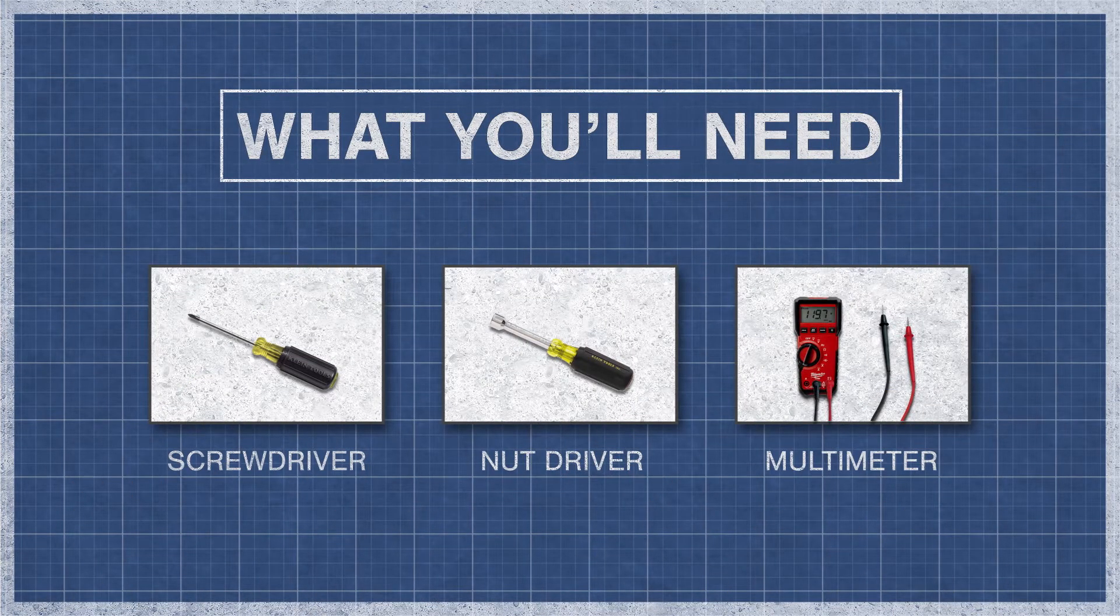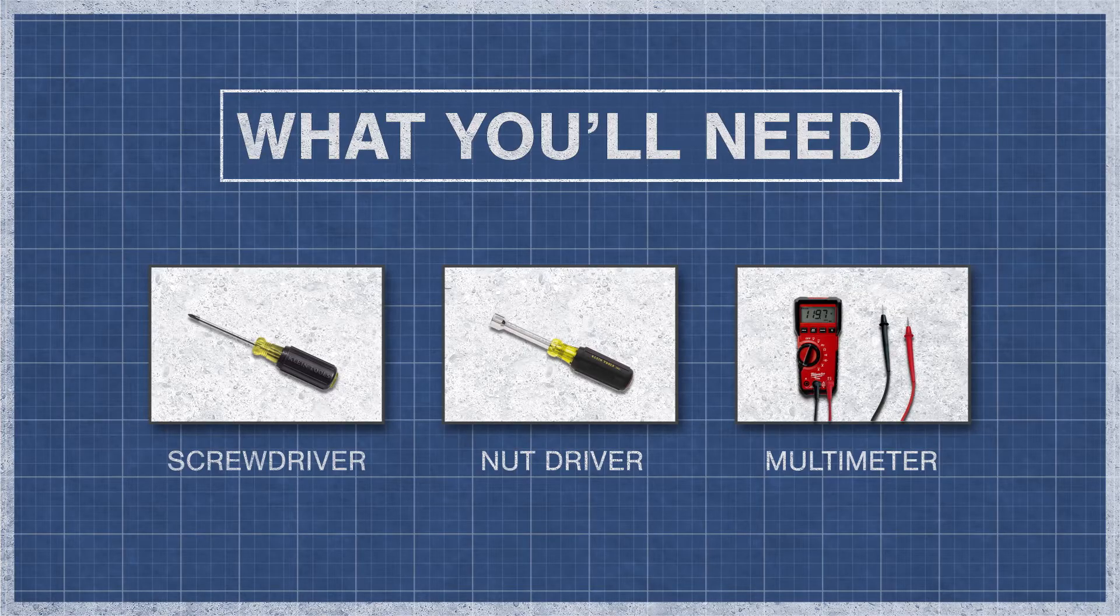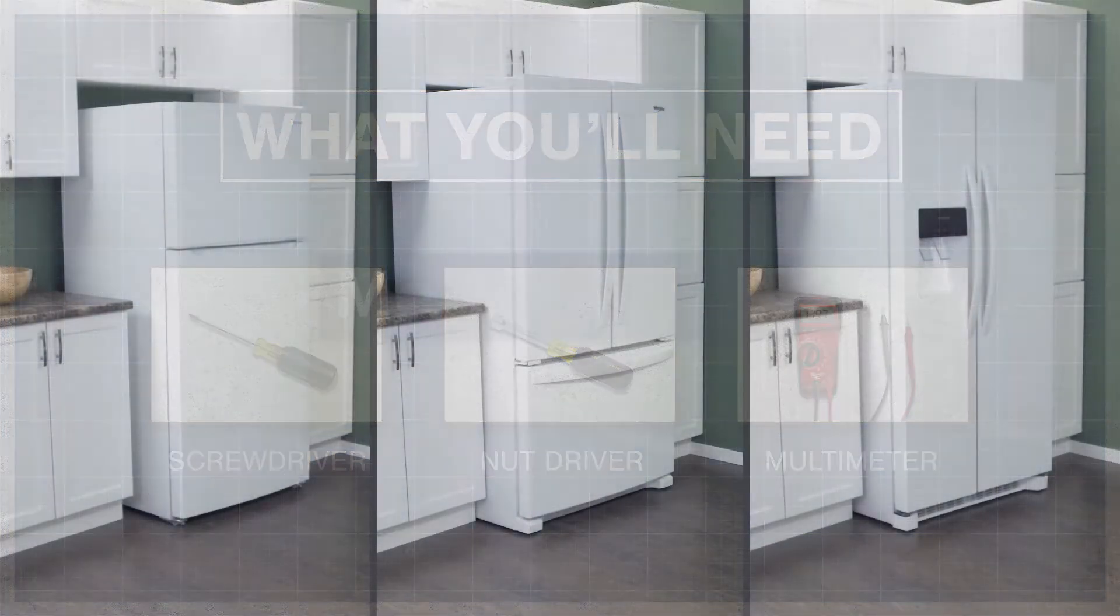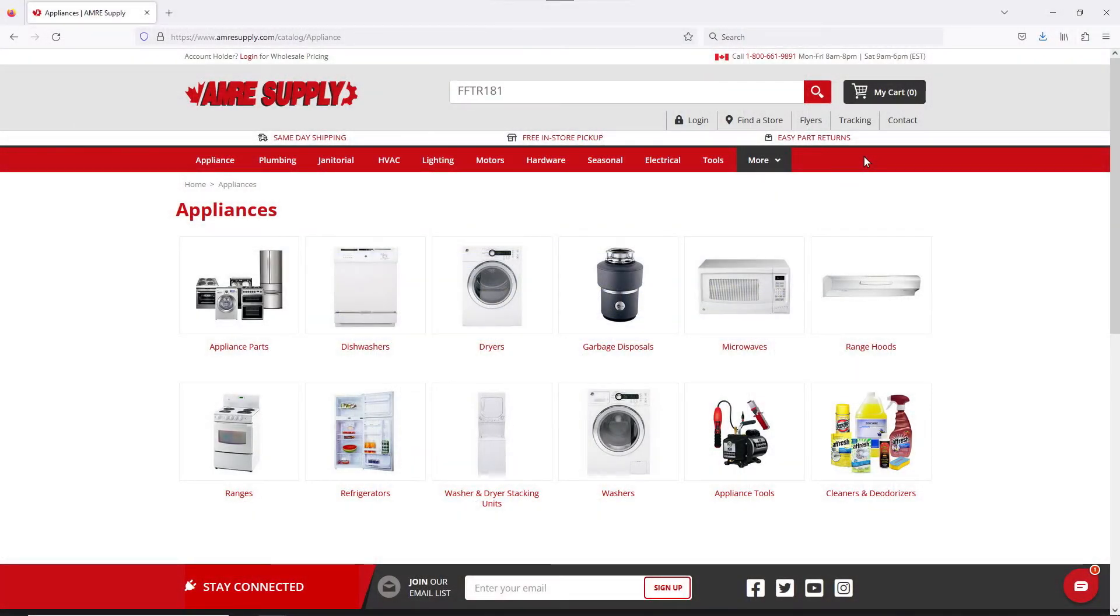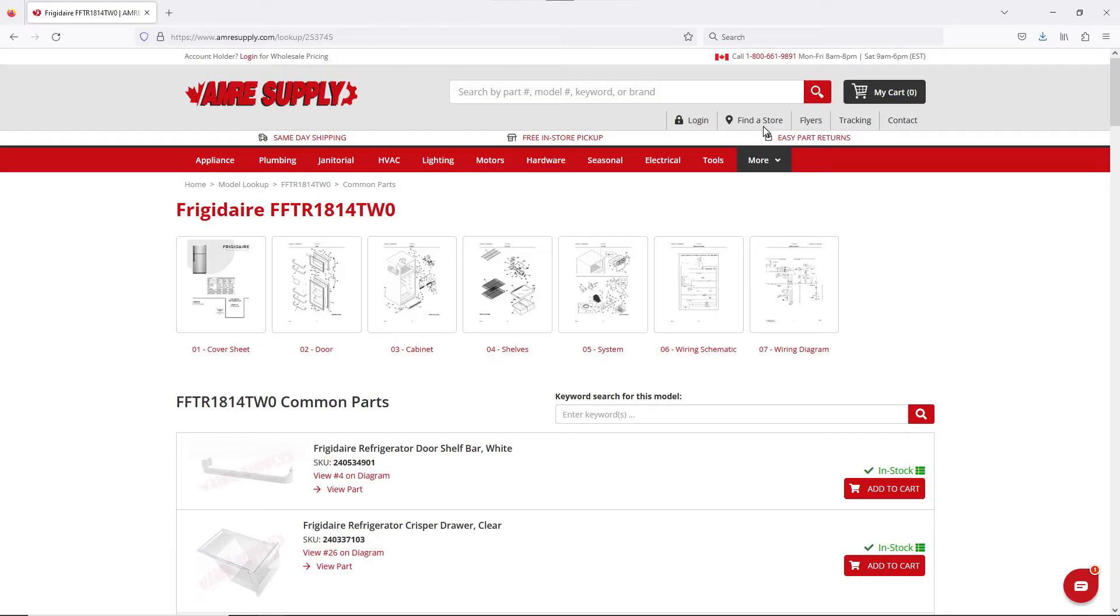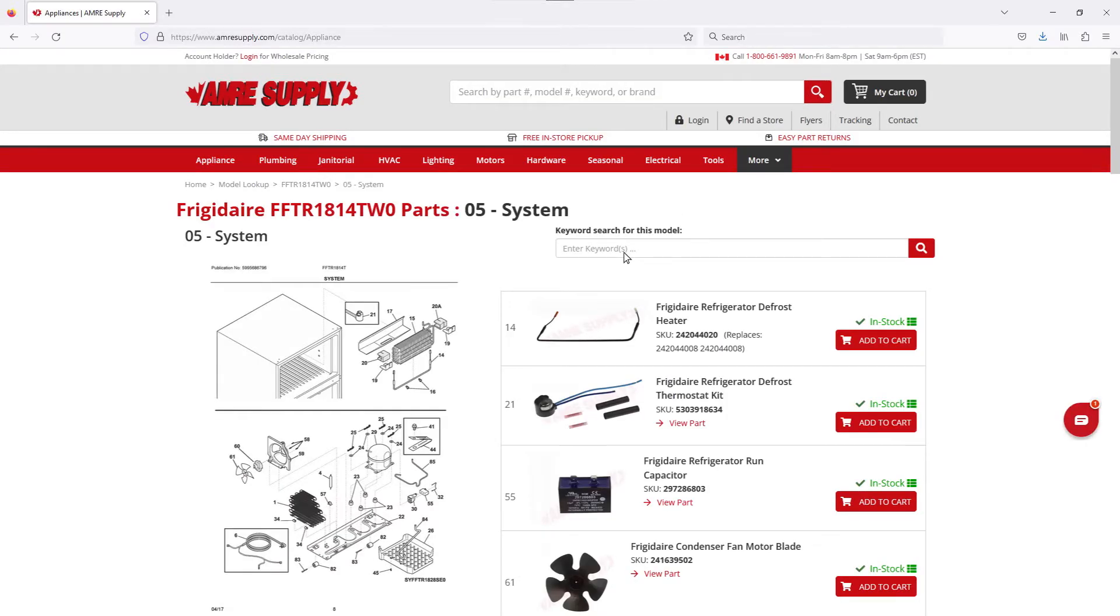To begin, you might need a screwdriver or nut driver and a multimeter. Keep in mind there is some variation between models and not all refrigerators will have the same parts. You can enter your model number on the AIM Resupply website to see a parts breakdown. This can be helpful to show you which parts are in your refrigerator and where they are located.